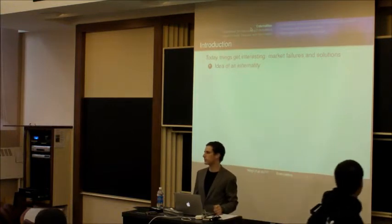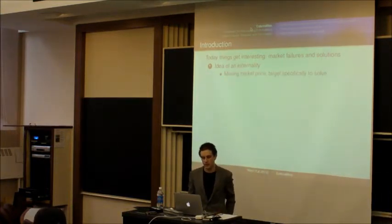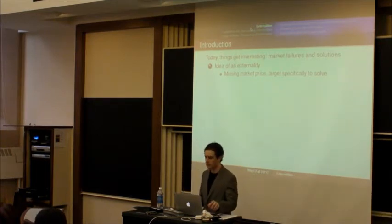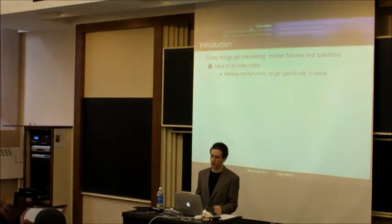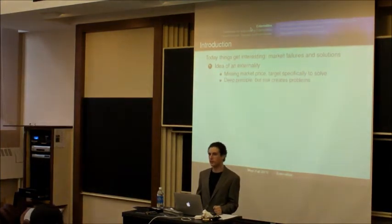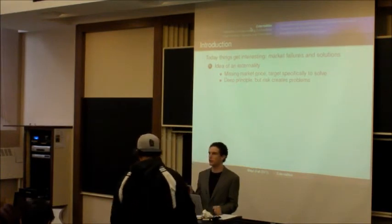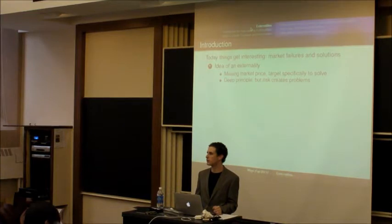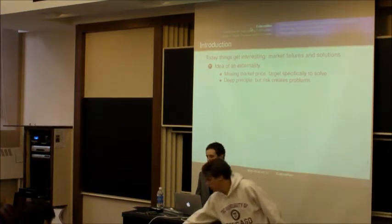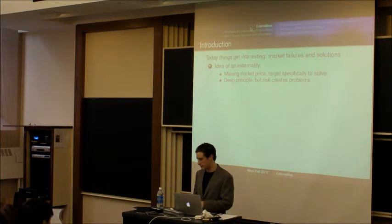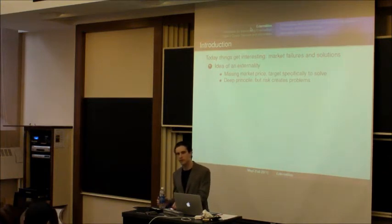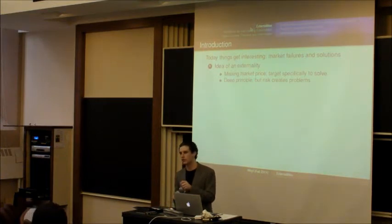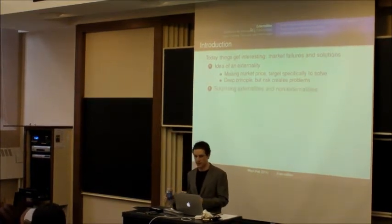We'll start by discussing the idea of an externality, and particularly formalizing it in terms of the notion of a missing price, and how Coase's principle suggests that we should target the solutions to the problems of externalities as close as possible to those problems. And we should try to keep people bear the consequences that their actions have for other people, but if those are uncertain, that can create a risk, and that's a problem.